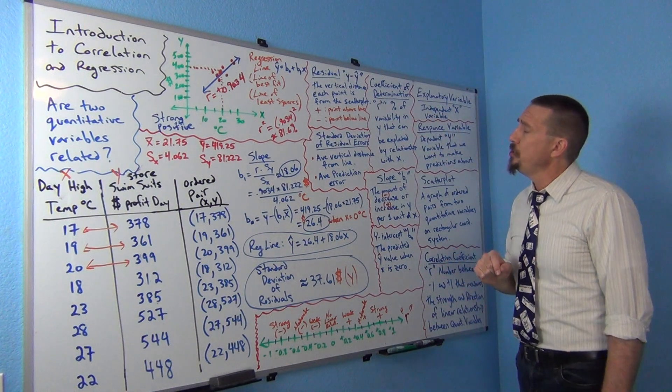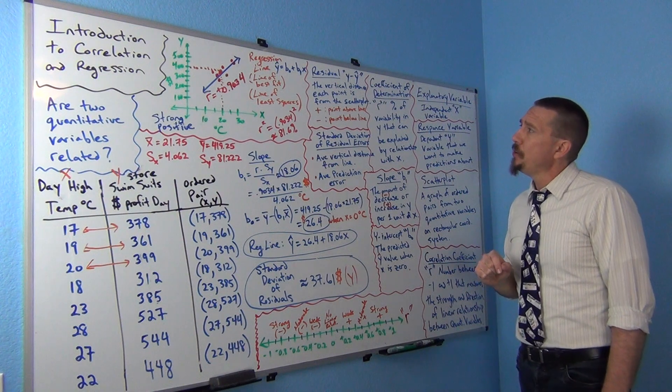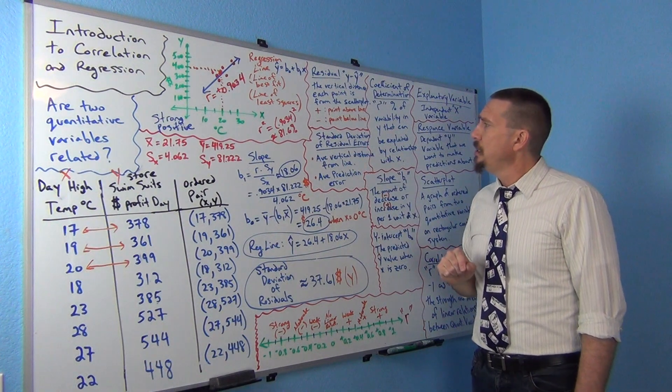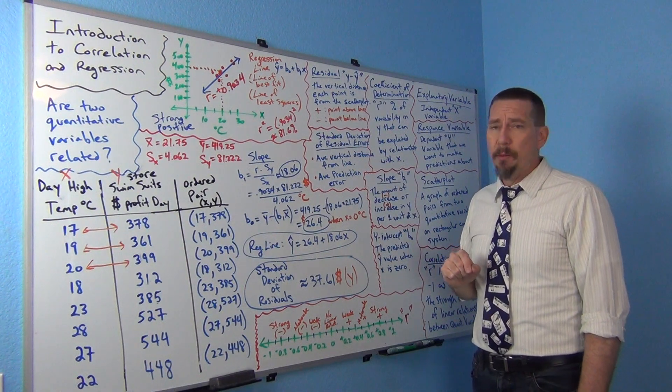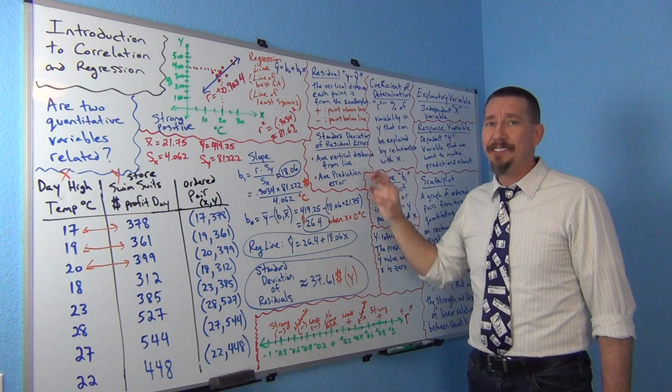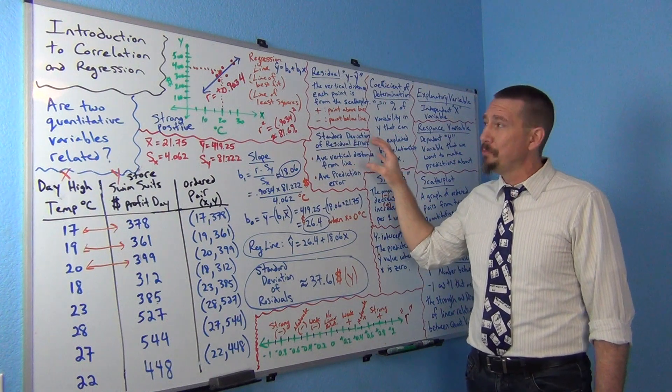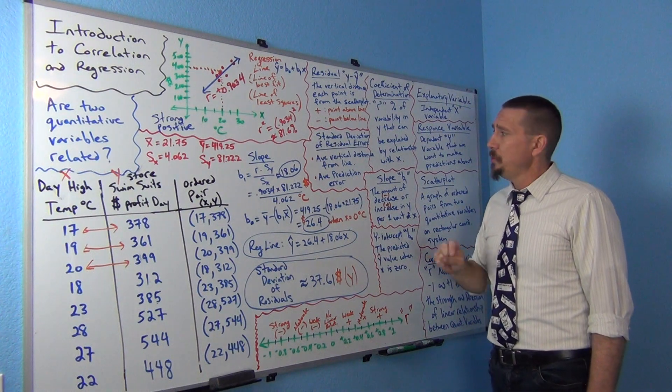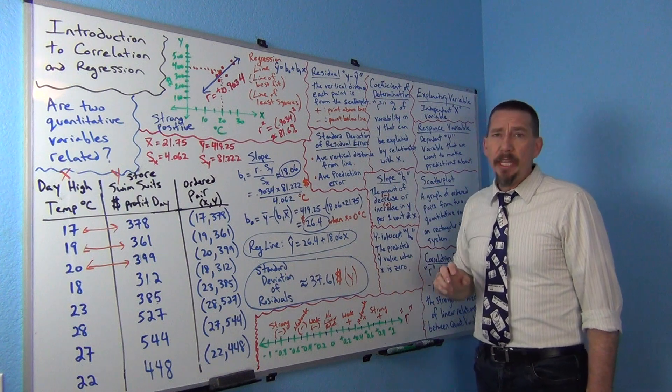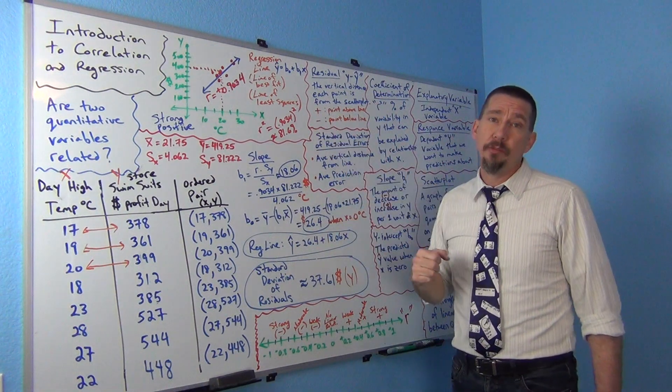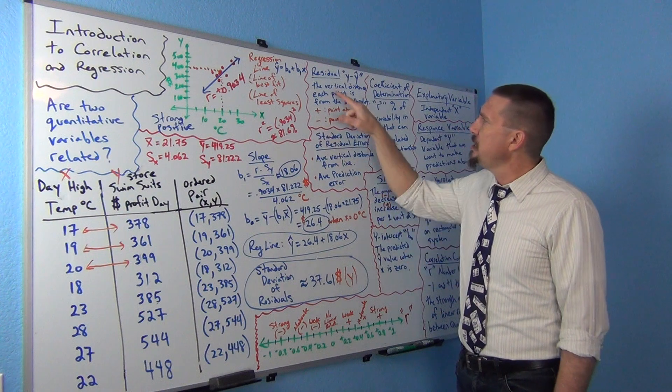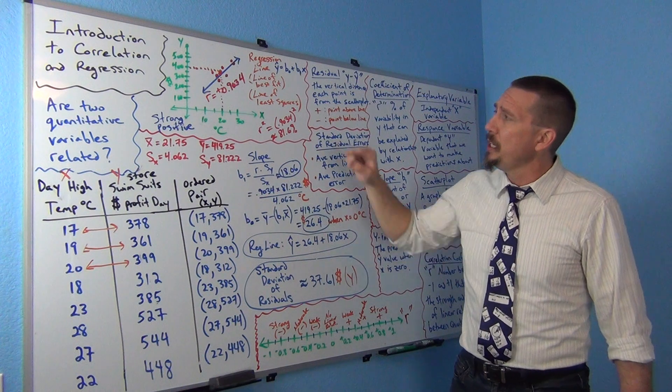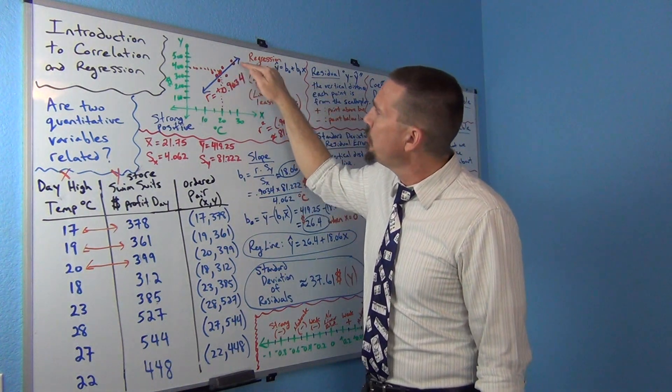Another number that we like to figure out is sometimes called the standard deviation of the residual errors. Now that's a very famous number. Again, the computer will calculate it. These are all numbers that are pretty difficult to calculate on your own. You really want to use a computer to calculate. But let's get this idea of a residual. This is another advanced topic in correlation and regression. A residual just is the vertical distance each point is from the scatter plot. So I look at each and every point. The computer will look at every single point.